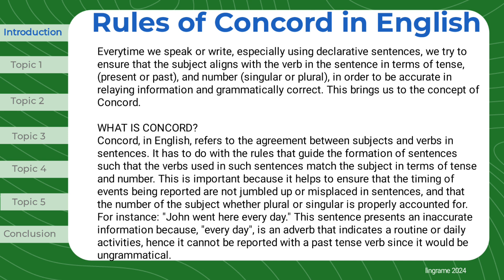What is Concord? Concord, in English, refers to the agreement between subjects and verbs in sentences. It has to do with the rules that guide the formation of sentences such that the verbs used in such sentences match the subject in terms of tense and number. This is important because it helps ensure that the timing of events being reported are not jumbled up or misplaced in sentences, and that the number of the subject — whether plural or singular — is properly accounted for.